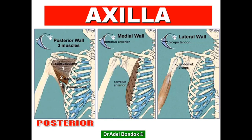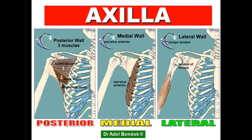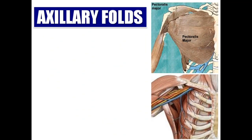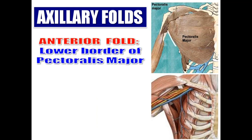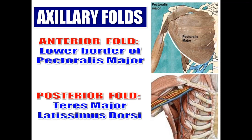The medial wall is formed of the ribs, intercostal muscles, and serratus anterior. The lateral wall is formed of the bicipital groove of the humerus and three muscles: the long head of biceps, short head of biceps, and coracobrachialis. Regarding axillary folds: the anterior fold is formed by the lower border of pectoralis major; the posterior fold is formed by the lower border of teres major and latissimus dorsi. The posterior fold is lower than the anterior fold, so the lower limit of the axilla is the posterior fold.